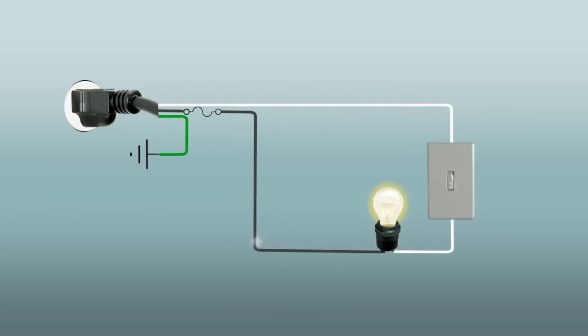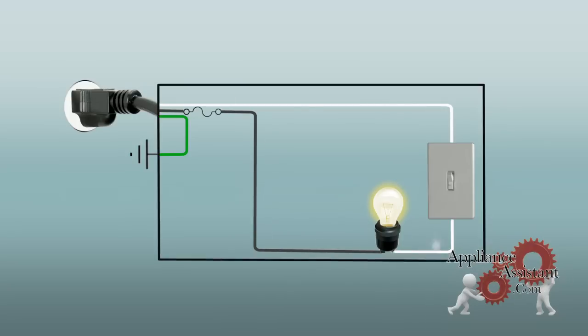Shorted circuits, grounded circuits, or open circuits can all occur within the conducting wire, component, or a control device such as a switch, thermostat, or timer. Let's take a look at this basic circuit and close it in a grounded cabinet and use it to demonstrate the three most common types of circuit problems that can occur.